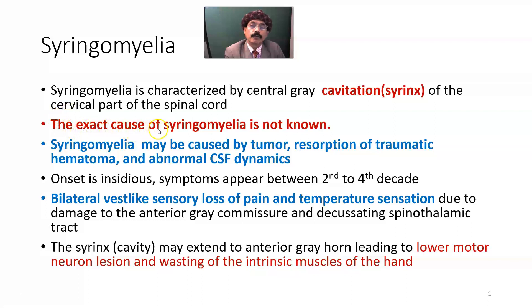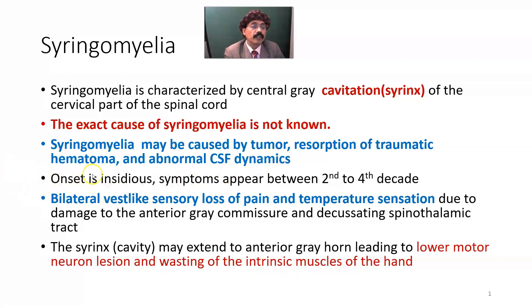The exact cause of Syringomyelia is not known, but it may be caused by tumor, specifically intra-medullary tumor, resorption of traumatic hematoma, and abnormal cerebrospinal fluid dynamics. Onset is insidious, and symptoms appear between the 2nd to 4th decade.